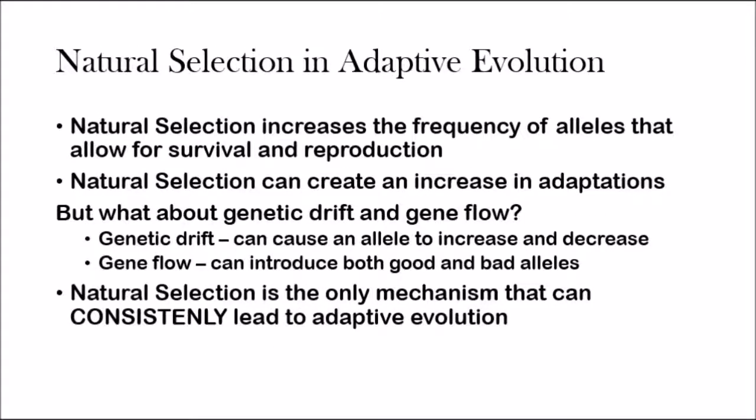Natural selection increases the frequency of alleles that allow for survival and reproduction — this is adaptive evolution — and natural selection can therefore create an increase in adaptations. But what about genetic drift and gene flow? Genetic drift can cause an allele to increase or decrease, and gene flow can introduce both bad and good alleles. The important point is that natural selection is the only mechanism that can consistently lead to adaptive evolution. Genetic drift and gene flow are sometimes good, sometimes bad, but natural selection is always helping the population and leading to adaptive evolution.